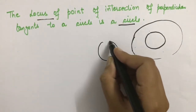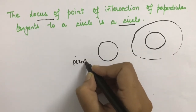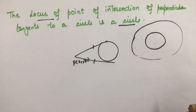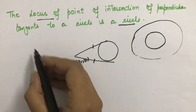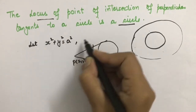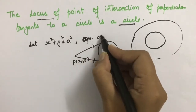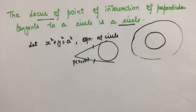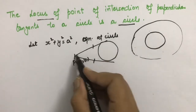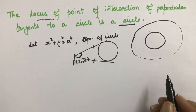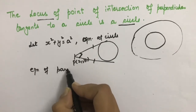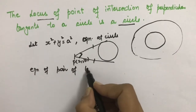Let the point be P(x1, y1). From here I draw two tangents, and I will find the joint equation of tangents. Let's first take the circle as x² + y² = a². This is the equation of the circle for which we have to find the director circle. We consider the point P(x1, y1) from which tangents are drawn at 90 degrees. Then we write the equation of the pair of tangents.